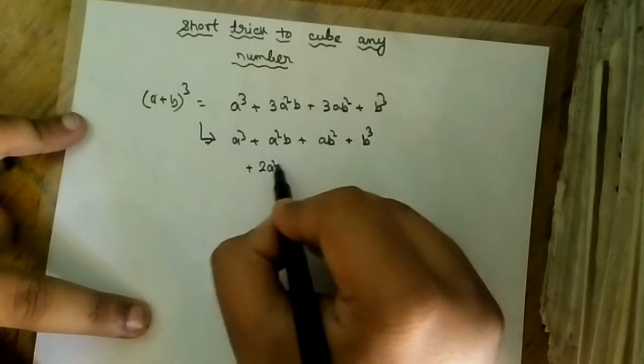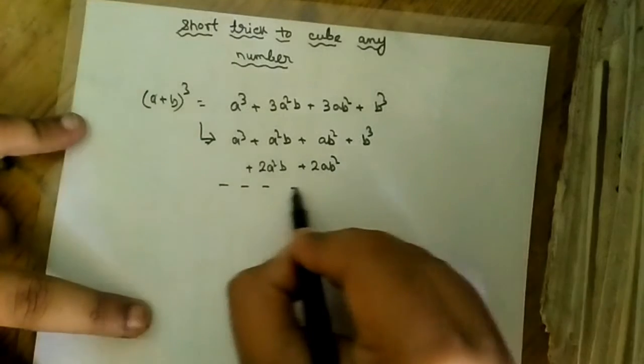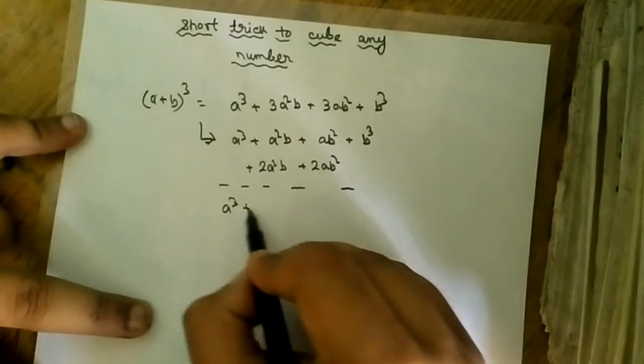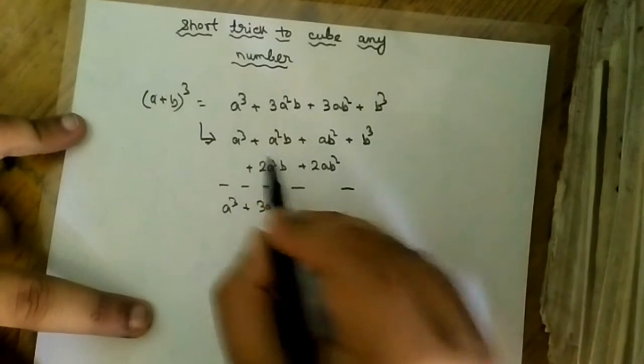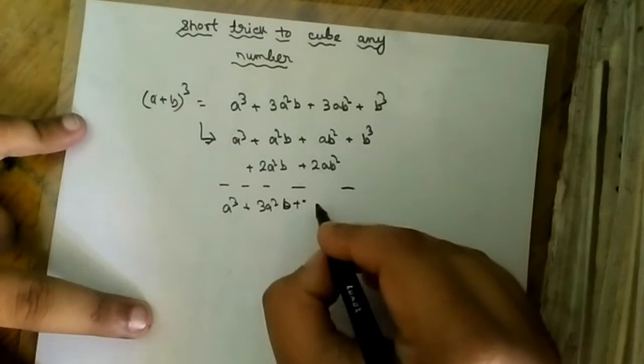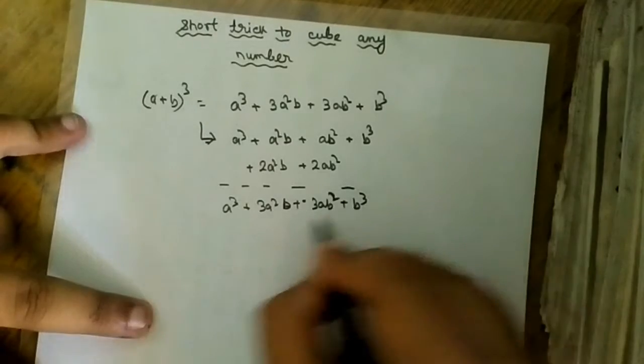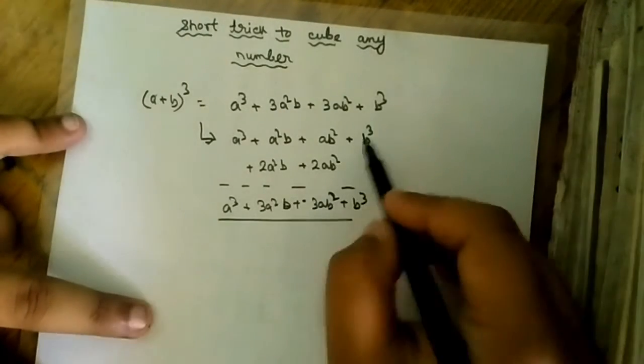2a square b plus 2ab square. Then the ultimate result would be a cube plus 3a square b (2 plus 1), 3ab square (2 plus 1 is equal to 3) plus b cube. In this method, in this process